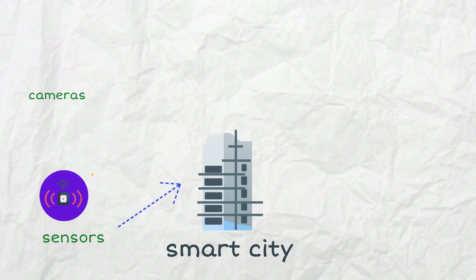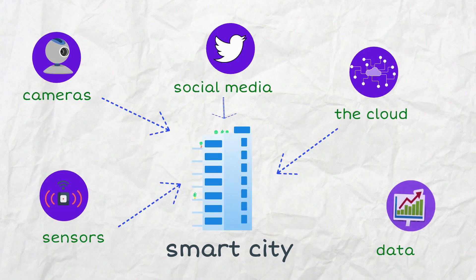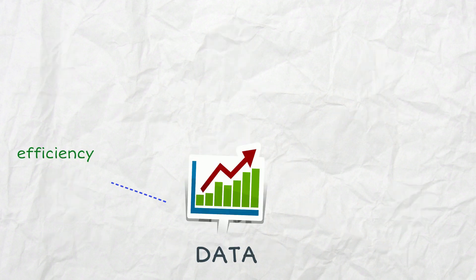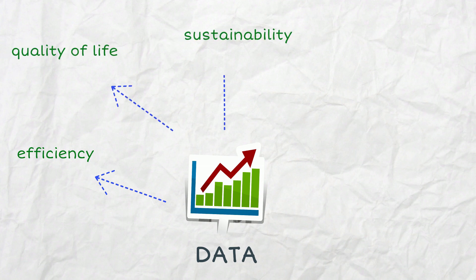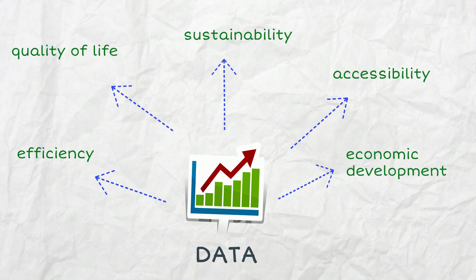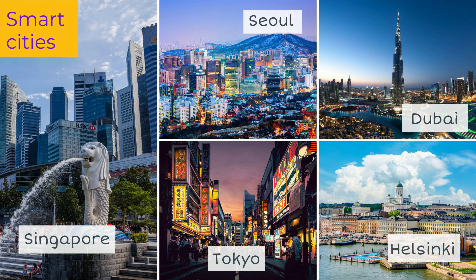Now let's explore the concept of a smart city, which has become extremely popular recently. A smart city uses sensors, cameras, social media and the cloud to collect and share data from and about people and infrastructure. The data are used to improve efficiency, quality of life, sustainability, accessibility and economic development. Smart cities are often called the cities of the future, but the future is happening now. There are several well-known smart cities around the world, some of the most famous ones being Singapore, Seoul, Tokyo, Dubai and Helsinki.